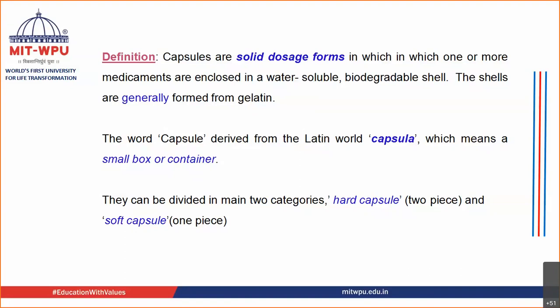Apart from gelatin, other materials can also be used — for example, HPMC (hydroxypropyl methyl cellulose) and cornstarch. Capsule shells of HPMC and cornstarch are already available in the market. The major disadvantage of gelatin is that it is prepared from animals, so for people who do not consume animal products, non-gelatin capsules are very useful.